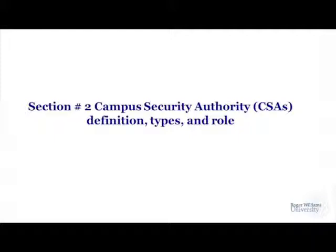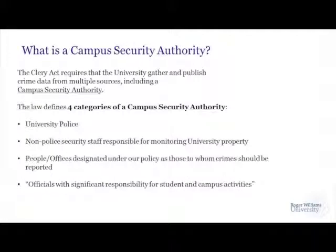Section two: Campus Security Authorities (CSAs) — Definition, Types, and Role. The Clery Act requires that universities gather and publish crime data from multiple sources, including a Campus Security Authority. The law defines four categories of a Campus Security Authority: one, university police; two, non-police security staff responsible for monitoring university property; three, people or offices designated under our policy as those to whom crimes should be reported; and four, officials with significant responsibility for student and campus activities. CSAs do not go by job title — they go by job description.